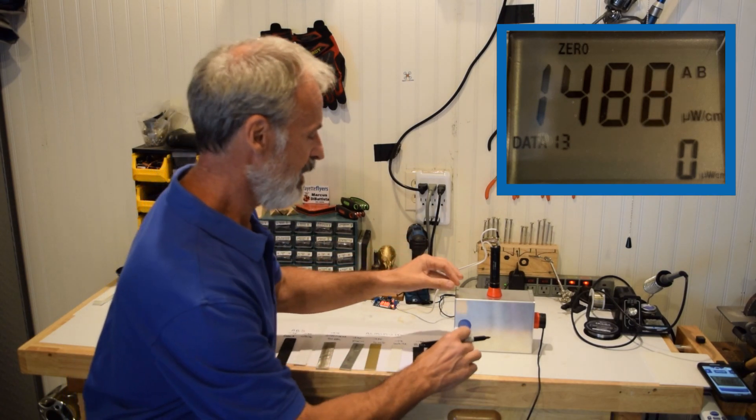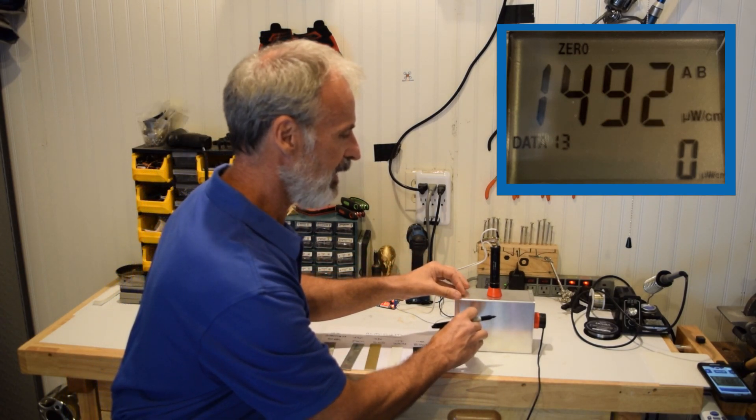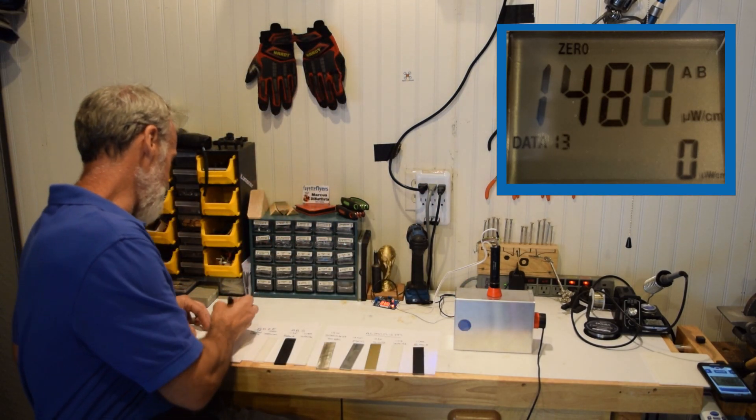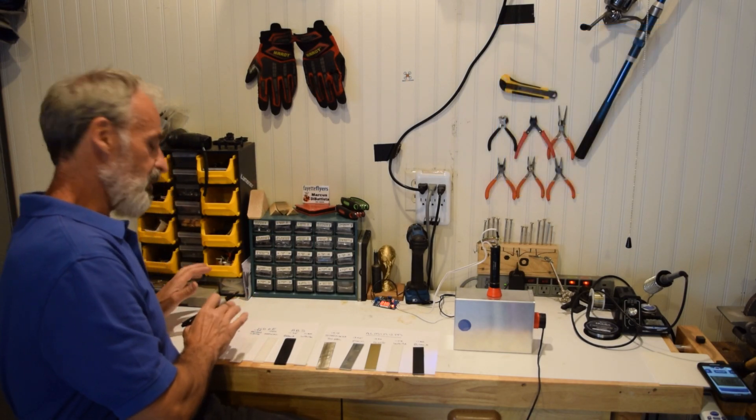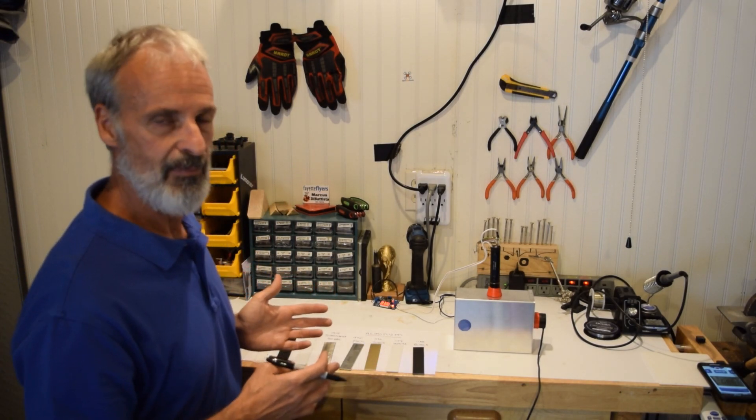And then you take the solid PTFE, which is translucent, which means some light is going through it. Again, almost no change. 1,490. Same. What that tells you is that very, very little energy is absorbed by PTFE, regardless of the form factor.